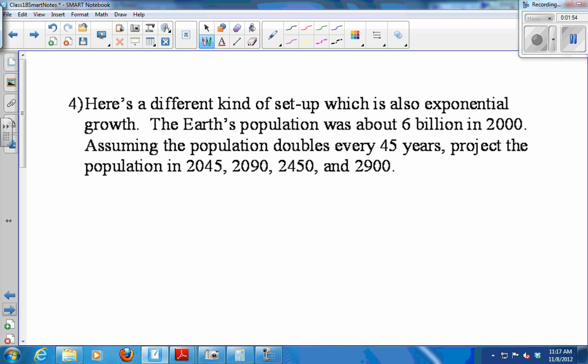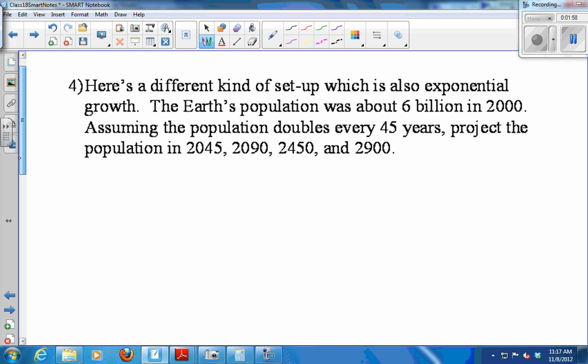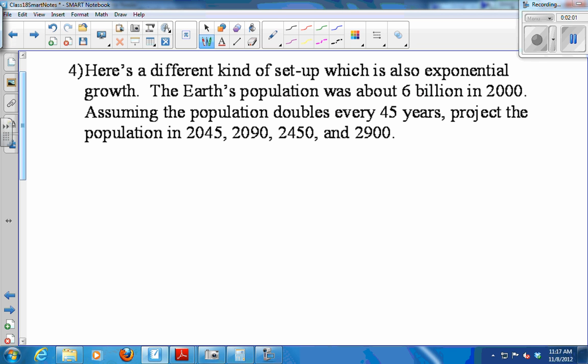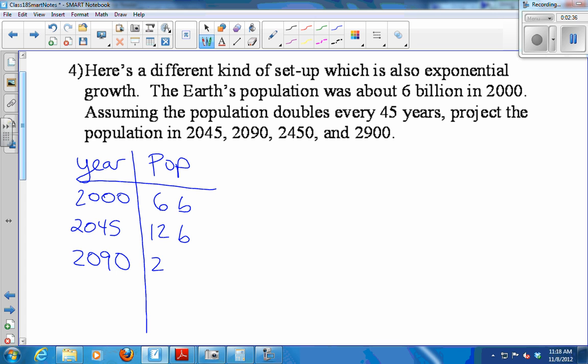So here's a little bit of a different setup. It's also exponential growth. The Earth's population was about 6 billion in the year 2000. And assuming the population doubles every 45 years, what will the population be in 2045? 12 billion. 12 billion, right? It doubles. 45 years have passed, so it'll double. So let's make a little table with year and population. So we'll put 2000, 6 billion. And then 2045, 45 years have gone by, so it should double to 12 billion. How about 2090? 24 billion. It's going to double again because another set of 45 years has gone by.